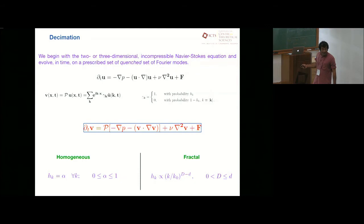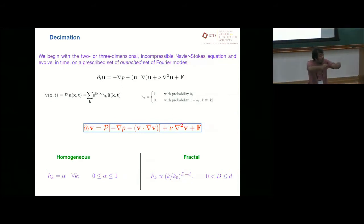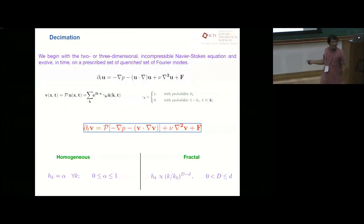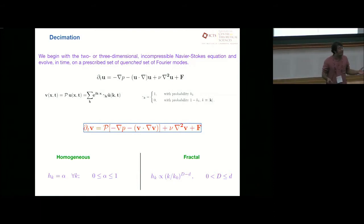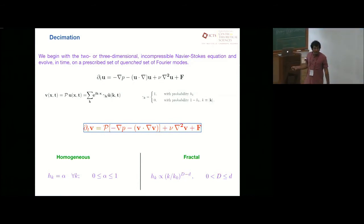So how do you choose this gamma k? There are two ways to do it. One is you do it randomly. So you assign a certain probability 0.5, 0.8, 0.7, what you will go to each Fourier mode and decide whether that will live or not. The other is a fractal way where you introduce a new dimension. You start removing modes in a scale invariant way so that the effective lattice is now of a dimension capital D, which is smaller than the original dimension.